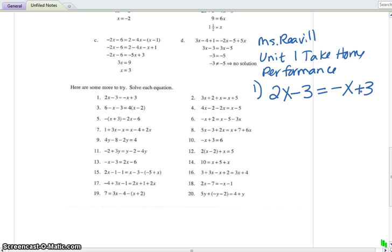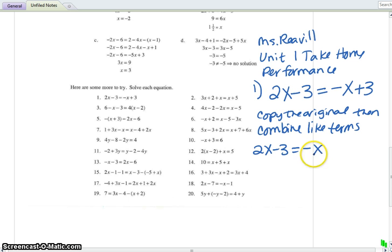Number 1 says 2x minus 3 equals the opposite of x plus 3. I'm going to step 1, copy the original. Step 2, combine like terms. So from 2x minus 3 equals the opposite of x plus 3, I'd like to add x to both sides, so that all my x terms are on the left side of the equation.